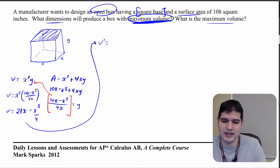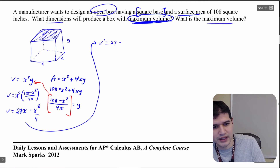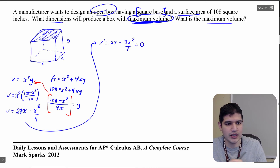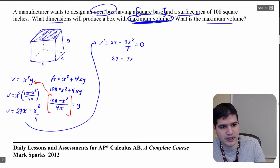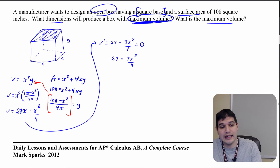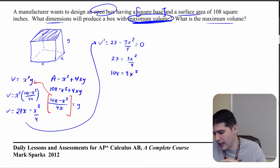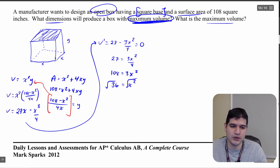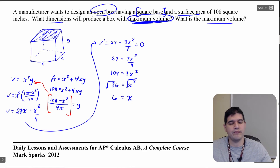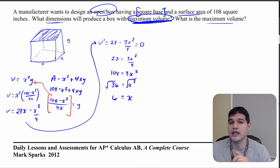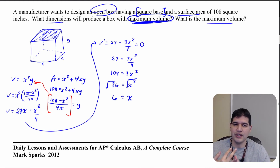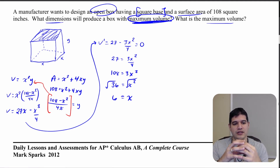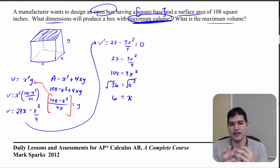Taking the derivative: V′ = 27 − (3X²)/4. Setting that equal to zero: 27 = (3X²)/4, so 108 = 3X², which gives X² = 36, and X = 6. Keep in mind that taking the square root of 36 gives both positive and negative values — I threw out negative six because we're working with a length, and you're not going to have negative length. So we keep X = 6.